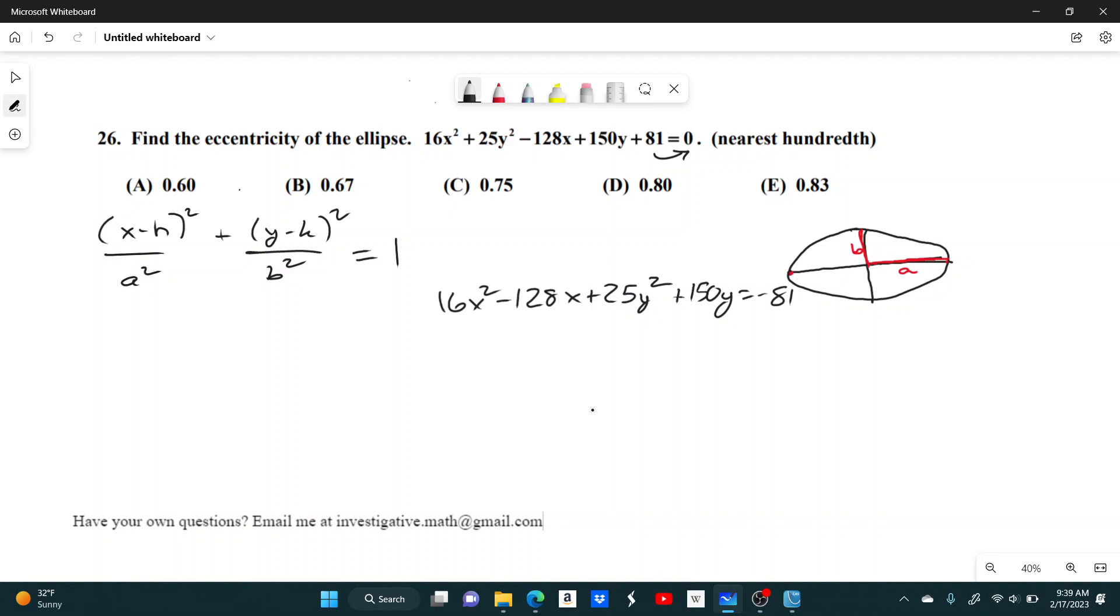Now I'm going to do some factoring. I'm going to take a common factor out of each of these sections. So 16 times x squared, and 128 divided by 16 should be 8. So 16 times x squared minus 8x, plus 25 times y squared plus, and then 150 divided by 25 is 6y, equals negative 81.